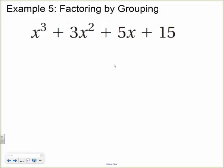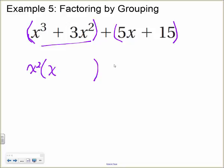For this next example we're going to factor by grouping. We have four terms — this is where we undo our old FOIL format. Group the first two terms and the last two terms. The first two have a GCF of x², so factor out x²: x³ ÷ x² = x, and 3x² ÷ x² = 3, giving x²(x + 3). For the second group, the GCF is 5: 5x ÷ 5 = x, and 15 ÷ 5 = 3, giving 5(x + 3).